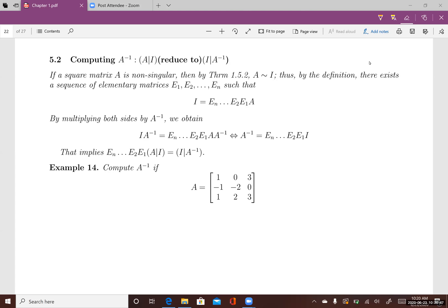This lecture introduces a method to compute the inverse matrix of a non-singular matrix. If A is a square non-singular matrix, then by theorem 1.5.2, A is row equivalent to I. By the definition, there exists a finite sequence of elementary matrices such that multiplying both sides by A inverse, we obtain the identity matrix.